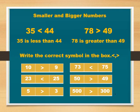Now, here we see smaller and bigger numbers written with symbols. In numbers 35 and 44, 35 is less than 44. Then, 78 and 49: 78 is greater than 49.